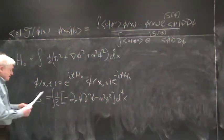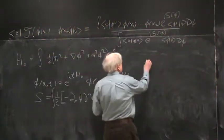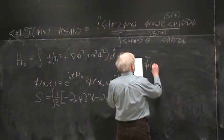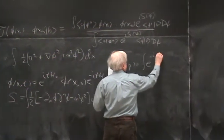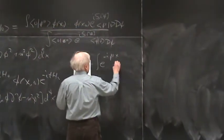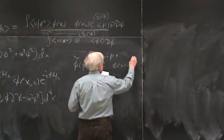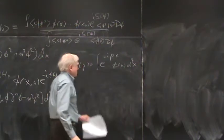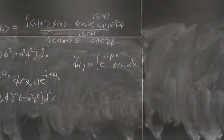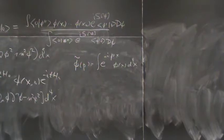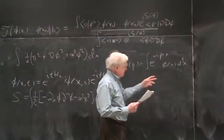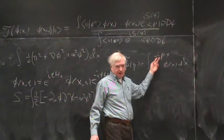We defined Fourier transform fields e to the minus i p x, phi of x, e to the i p dot x. Unfortunately in these notes I'm following Weinberg's metric, but that just means you flip the sign of this thing. This sign is always arbitrary.